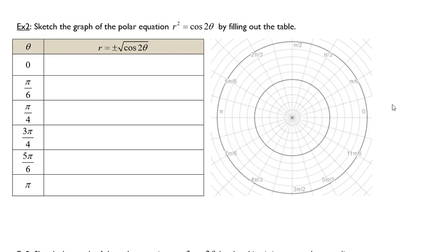5 pi over 6, and pi. We also have solved the equation r squared equals cosine 2 theta for r, so we can actually graph the thing.